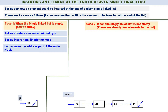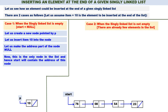We have a new node pointed by P with an info part and an address part. Now, start should contain the address of this node, because start should always contain the address of the first node. This is the only node in the list, hence start will contain the address of this node. Start is containing the address of this node. Case 1 is very simple — it ends there.